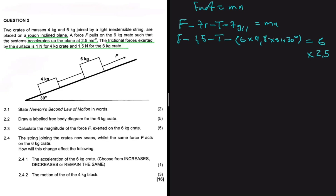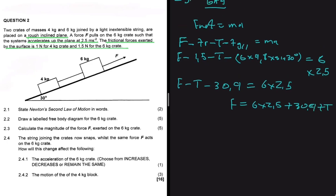So we can see that F minus tension minus 30.9 equals 6 multiplied by 2.5. If we make F the subject of the formula, we get F equals ma plus 30.9 plus tension. It's clear that we don't yet have the tension value — if we had the tension we'd be able to find F. So let's go to the 4 kg block to find the tension.